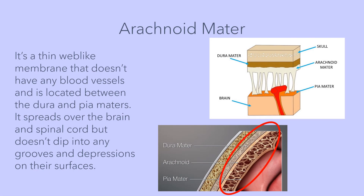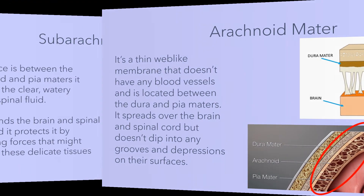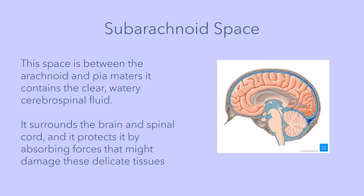Next, we have the arachnoid mater. The arachnoid mater is a thin, web-like membrane that doesn't have any blood vessels and is located between the dura and pia maters. It spreads over the brain and spinal cord but doesn't dip into any grooves and depressions on their surfaces. In between the arachnoid and pia maters is the subarachnoid space, which contains the clear, watery cerebrospinal fluid. It surrounds the brain and spinal cord and protects it by absorbing forces that might damage these delicate tissues.